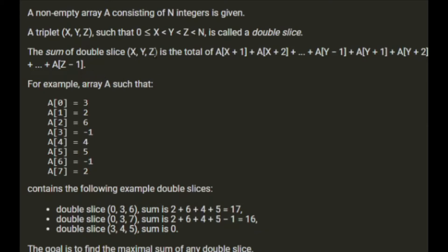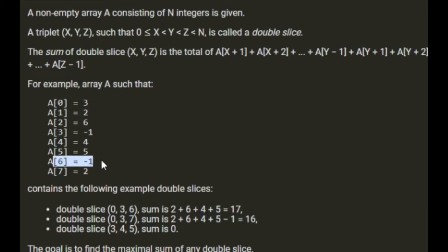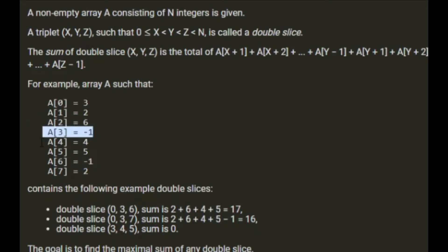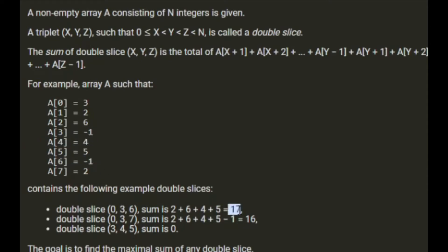So x, y, z are three values of the array that we're going to miss out. For example, given array A, double slice (0, 3, 6) contains elements 2, 6, 4, and 5 — skipping index 0, then 3, then 6. The sum is 17.